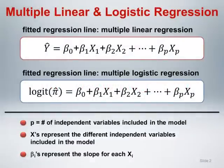The first equation shown here is the general expression for the fitted regression line from a multiple linear regression model. This is very similar to what we had for simple linear regression, except now we have more independent variables and corresponding beta, or slope, coefficients. Beta 0 still represents the intercept, and beta 1 is the slope corresponding to the first independent variable. Beta 2 through beta p, where p is equal to the number of independent variables in the model, represent the slopes for the second through the p-th independent variables. The second equation shown here is the corresponding fitted regression line for a multiple logistic regression model.